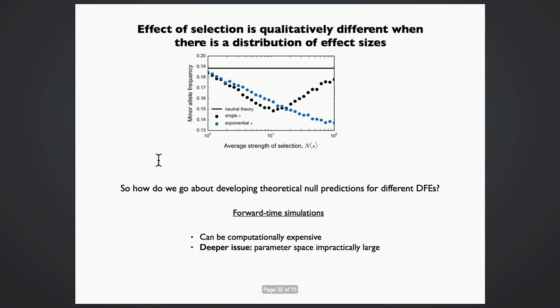So how do we go about making theoretical null predictions for diversity statistics? There's always the possibility of forward time simulations, but there are two problems with these. One is forward time simulations are computationally expensive. So for each and every one of the points that I'm showing you on the graph above, it takes a few hours to simulate it. But there's a deeper issue over here. Whenever you have a continuous distribution, now you have an infinite number of degrees of freedom. So it's unclear even which parameters you should vary. We don't even have a theoretical understanding of which parameters are the important ones.